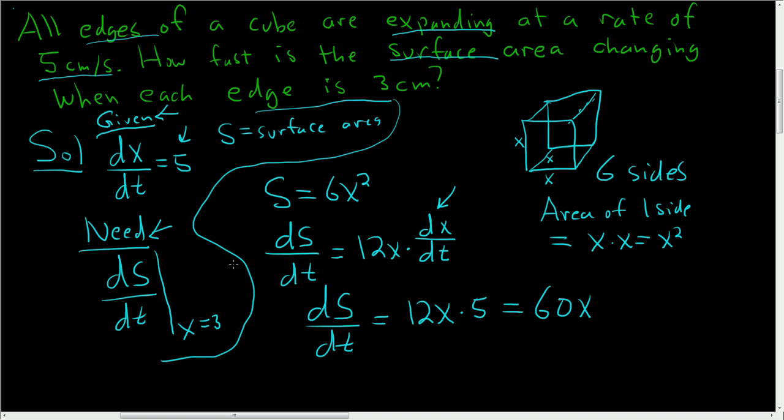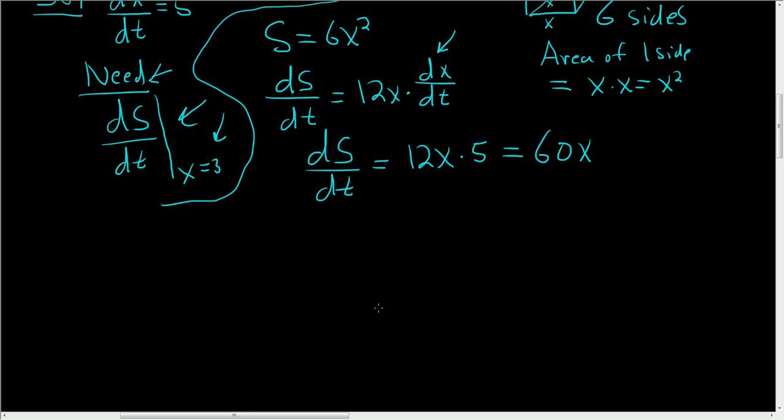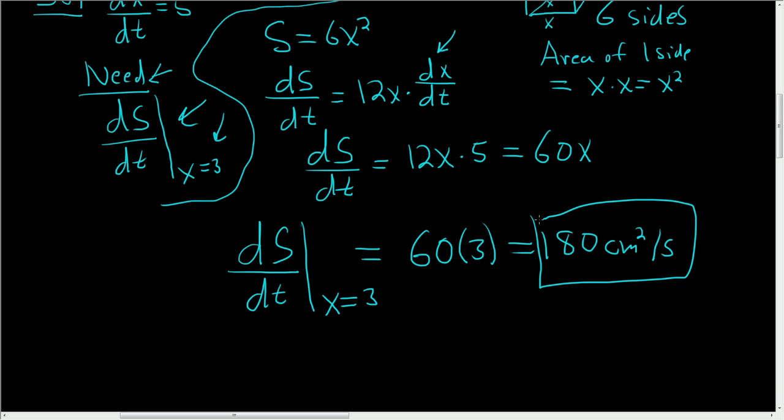The question is asking for dS/dt when x equals 3. So all we have to do now is plug in 3. So to finish, dS/dt at the moment in time when x is equal to 3 is equal to 60 times 3, so 180 centimeters squared per second. And that's it.